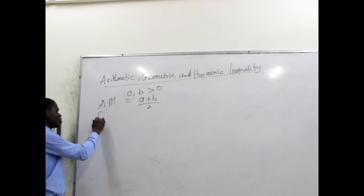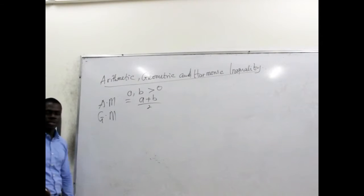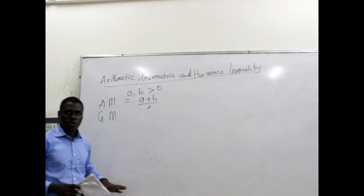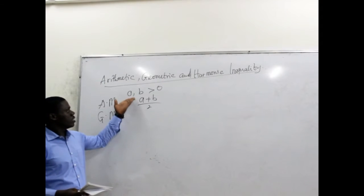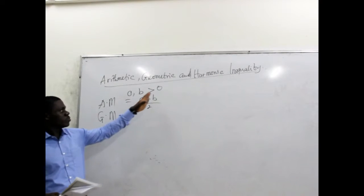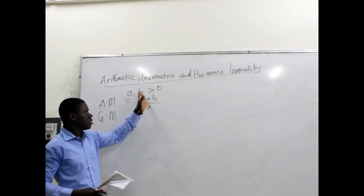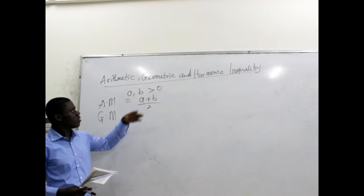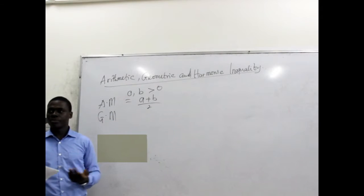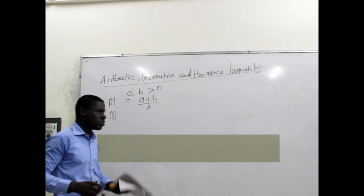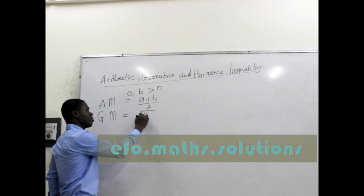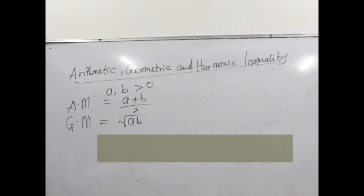For geometric mean, we write it as GM. The geometric mean of any numbers is the square root of their product. We're looking at A and B as positive numbers. One may ask why we put in the restriction that numbers should be greater than zero — because geometric mean involves a square root, and once one of these numbers becomes negative, we move into the complex domain, which we are not interested in at this moment. So the geometric mean is the square root of A multiplied by B.